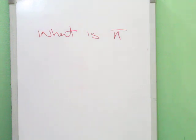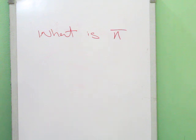Hello everyone and welcome to our channel Knowledge In. We have been using and seeing this word pi everywhere — in our numerical problems and questions in mathematics, physics, and other places. But we don't know why we take the pi value as 3.14, or 22 upon 7.